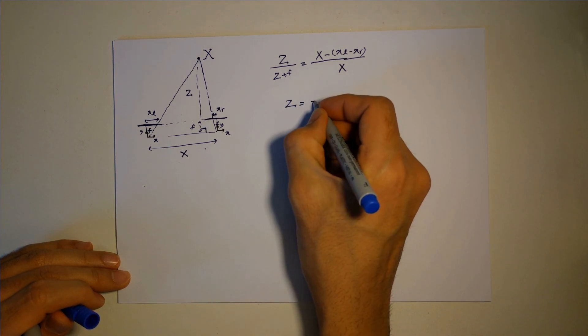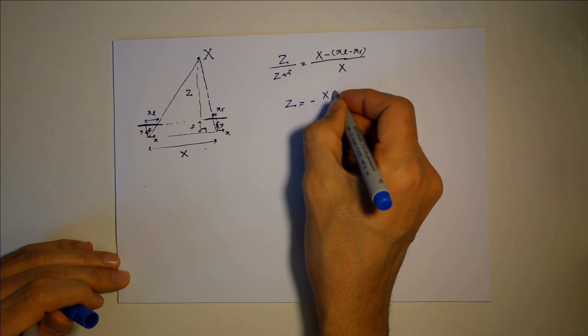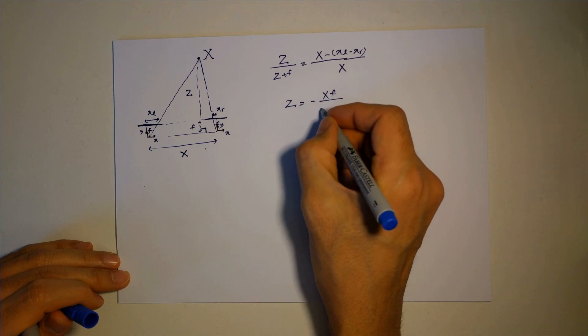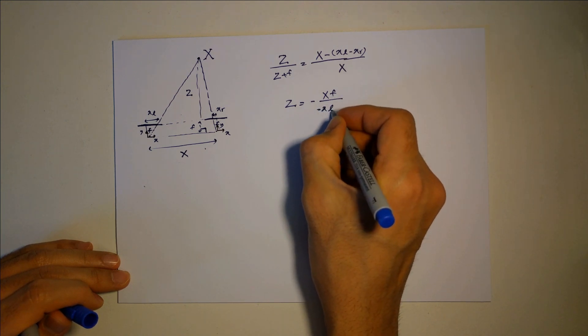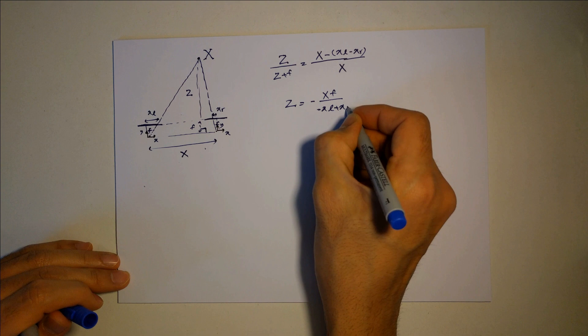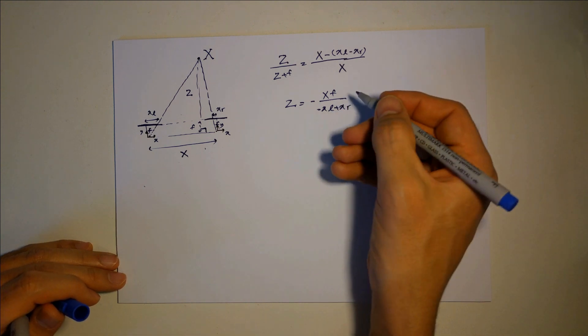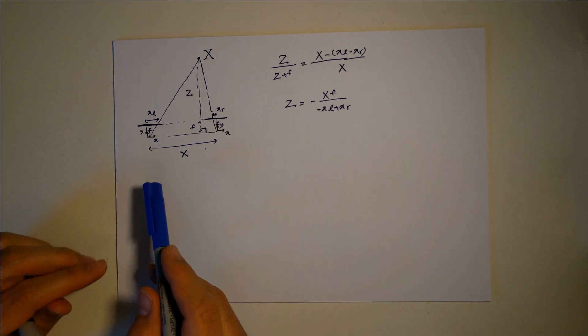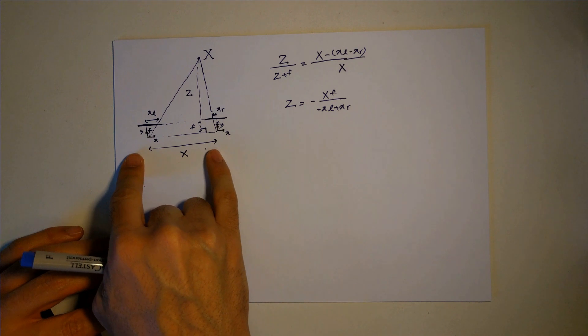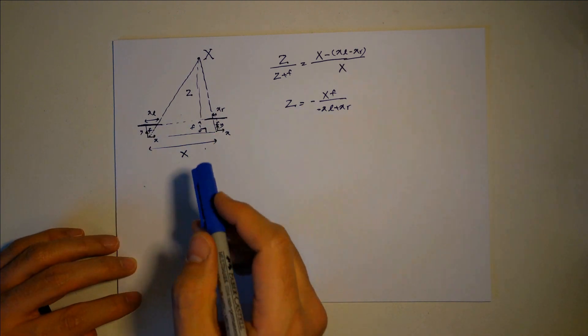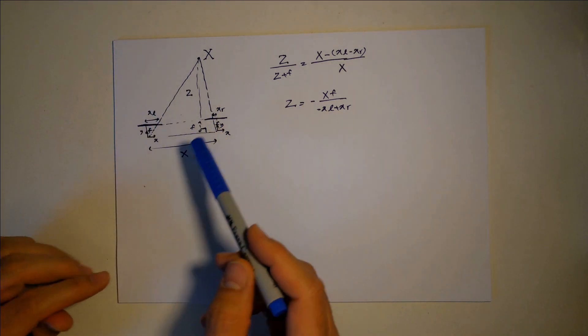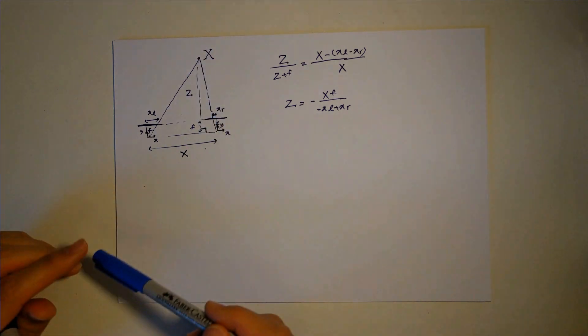Z is equal to minus X multiplied by F minus X of L plus X. So that's how you can find the distance between your camera and the object. Basically all you need to know is the distance between your cameras and the F, and if you can find a place in the world that you can exactly pinpoint in your cameras, you can find the distance between these two.